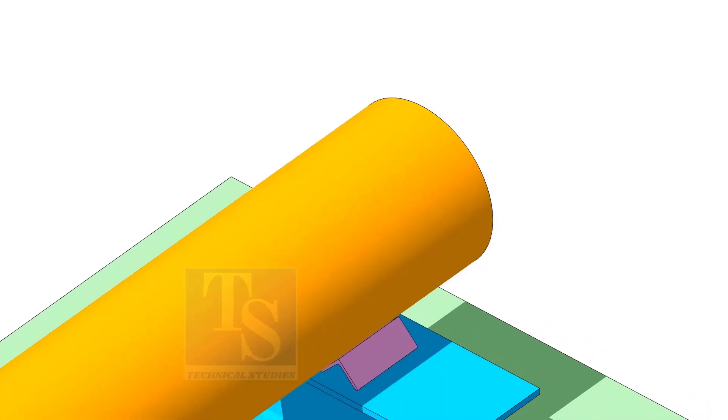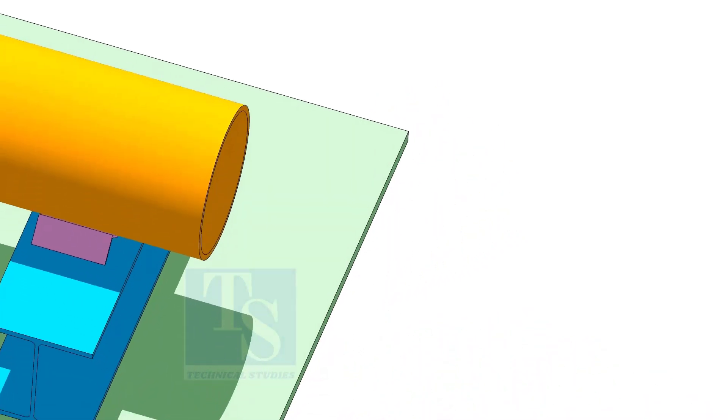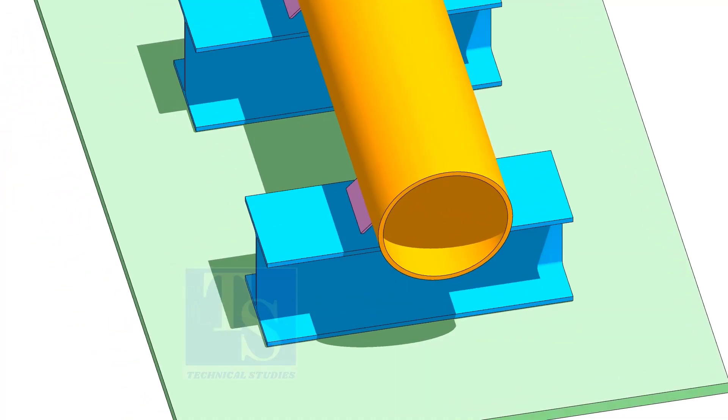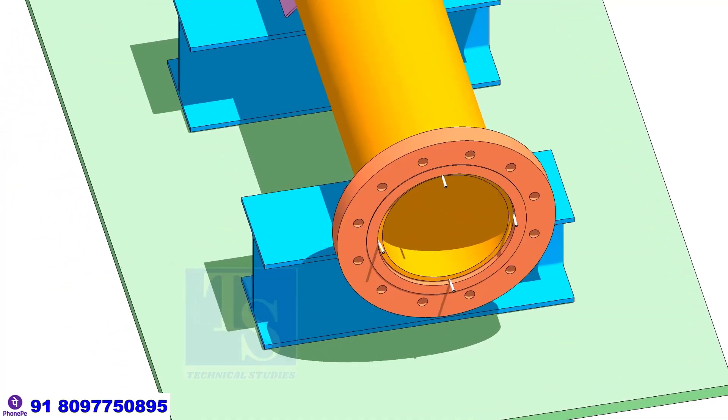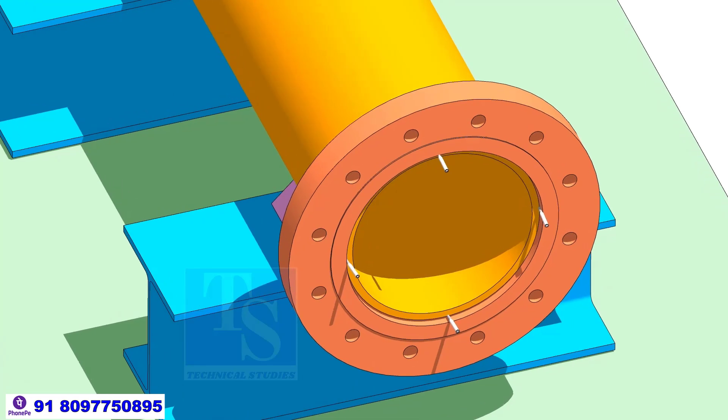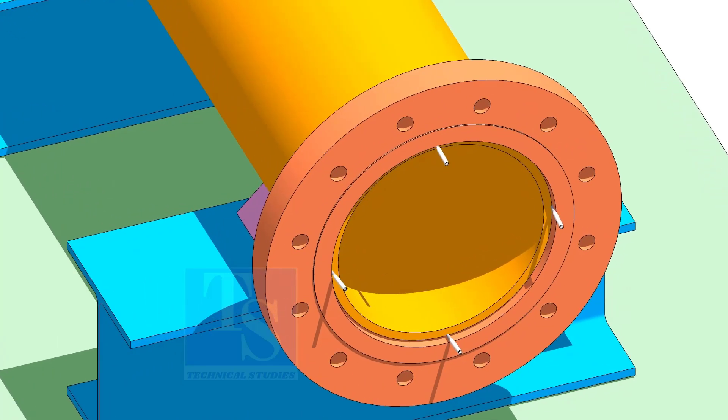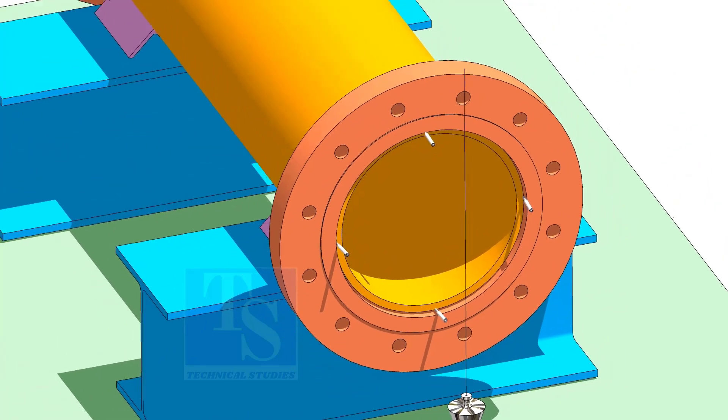Go to the other end of the pipe, put the flange, correct the gap between the pipe and the flange and correct the gap for the welding. Correct the plumbness.